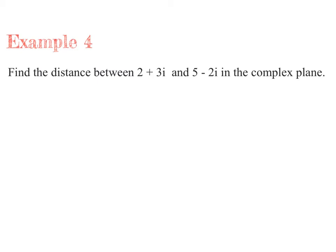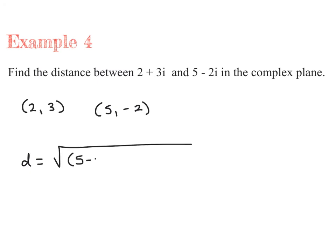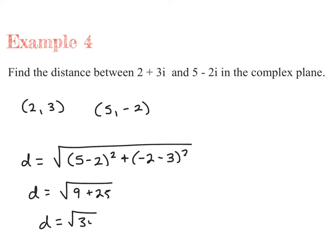Let's try this example. We're going to find the distance between 2 plus 3i and 5 minus 2i in the complex plane. Let's start by writing them each as coordinates: (2, 3) and (5, -2). Then I'm just using the distance formula: square root of (5 minus 2) squared plus (negative 2 minus 3) squared. So we have the square root of 9 plus 25, which gives us the square root of 34. Exact same as using the distance formula within a normal xy-axis.